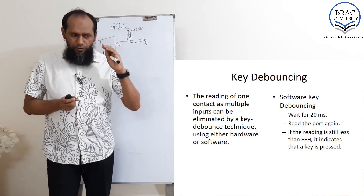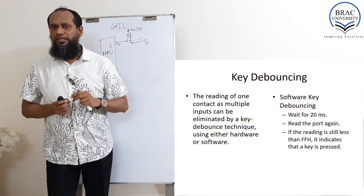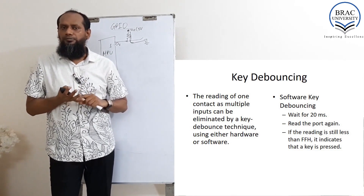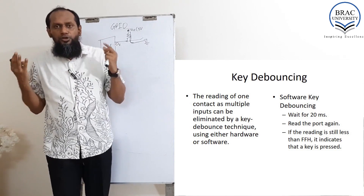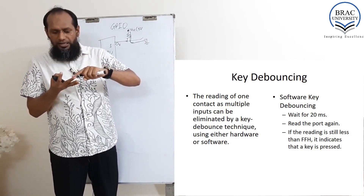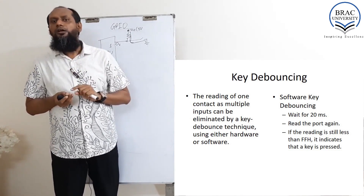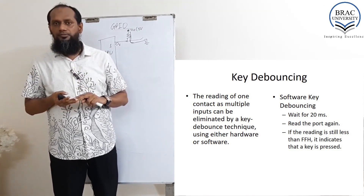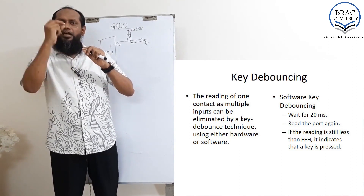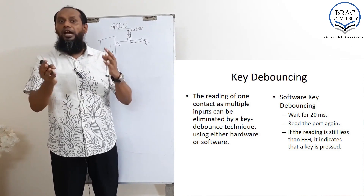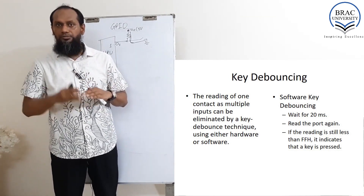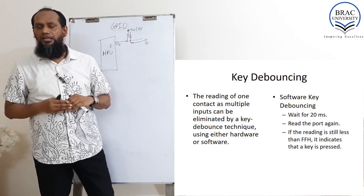For the push button switch, one very important issue is there. When you push, maybe for your one press, it connected twice or three times — three times means three signals, which is not good for us. When you push, maybe at the time your finger was just vibrating and it made three short connections. In the same way, when you release your finger, maybe it touched the upper part twice or three times. Three times means three off signals, and three times touching the bottom means three on signals. We need to handle this.